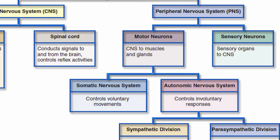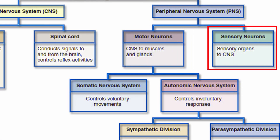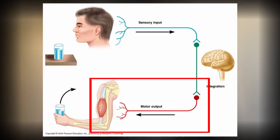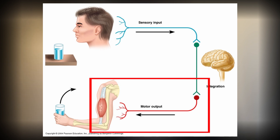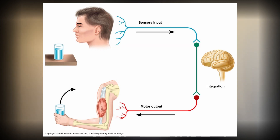Let's just focus on the PNS. From there, it branches into two types: the motor and sensory neurons. The motor neurons carry messages from the brain and spinal cord out to the muscles and glands. While, as you probably guessed, sensory neurons bring in information from the world and our body — from the organs back in to the brain and spinal cord.